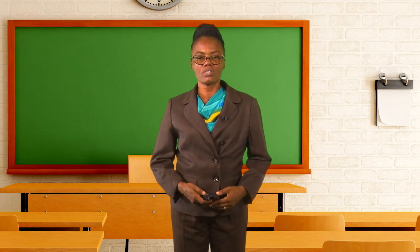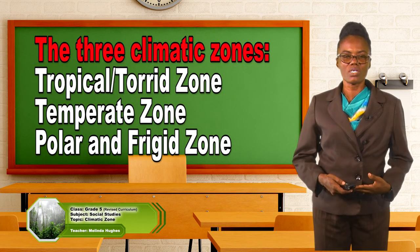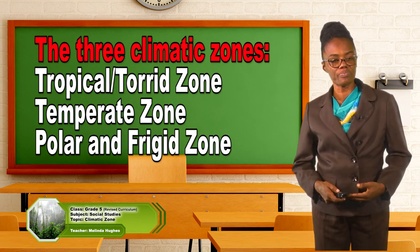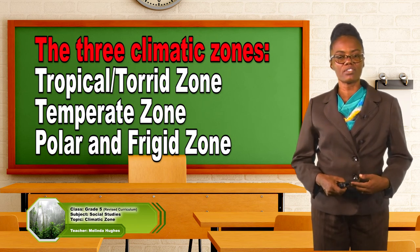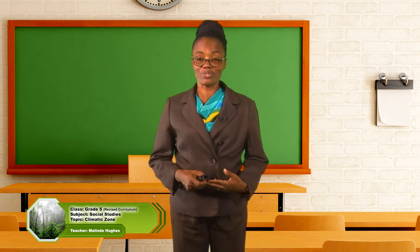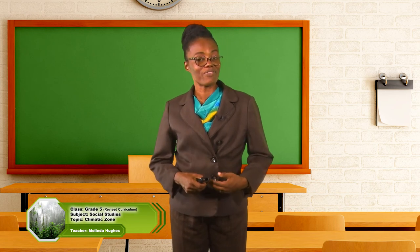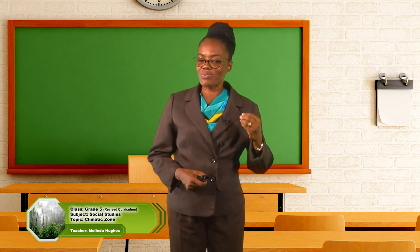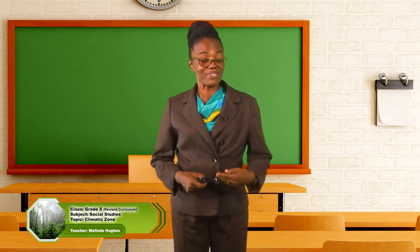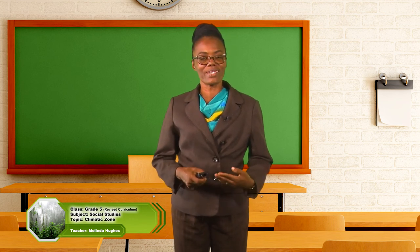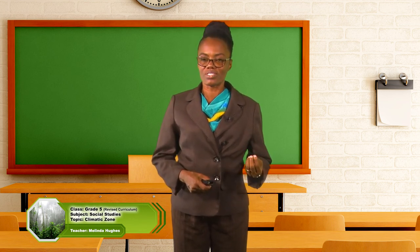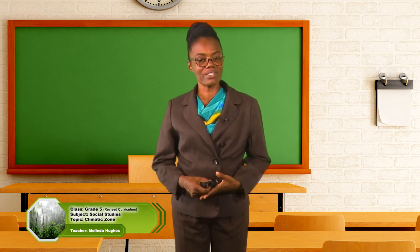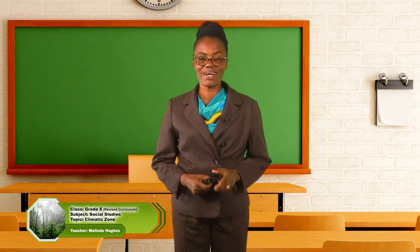So there we have it, boys and girls — the three climatic zones that are found on Earth: the tropical or torrid zone, the temperate zone, and the polar or frigid zone. I am sure that after you have learned about these zones, you have in your mind which one you prefer to live in. In our next lesson, we will examine the peoples and the way they live in the different climatic zones. Until then, boys and girls, stay safe and have fun.